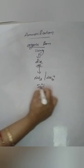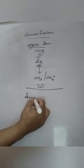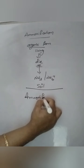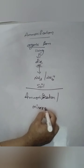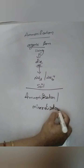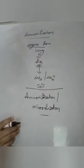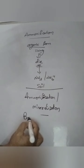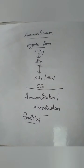They are decomposed into ammonium ion or ammonia form in the soil. This complete process is called ammonification, or we also call it mineralization. This is carried out by ammonifying bacteria — for example, Bacillus — which converts organic nitrogen into ammonia.